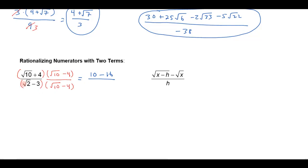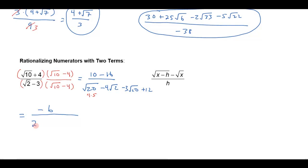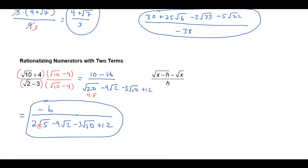In the denominator I'll have to FOIL. I'm going to get the square root of 20 minus 4 square roots of 2 minus 3 square roots of 10 and then plus 12. So this is going to simplify — I'm going to get negative 6 in the numerator. In the denominator, you want to think of the square root of 20 as square root of 4 times 5, so I can write that as 2 square roots of 5, minus 4 square roots of 2, minus 3 square roots of 10, plus 12. I don't see anything that will cancel out, and that's my final answer.